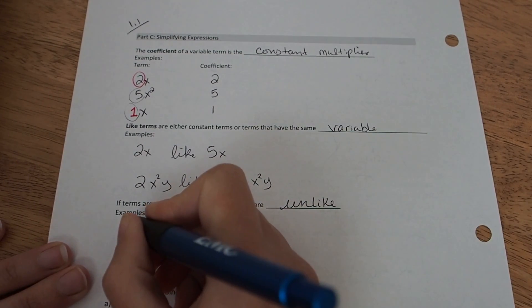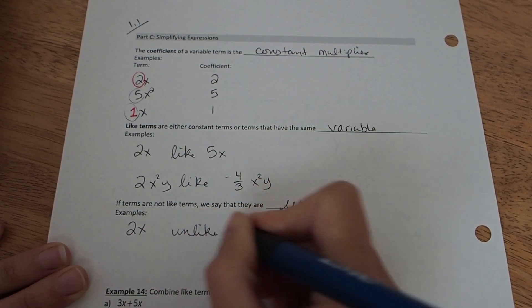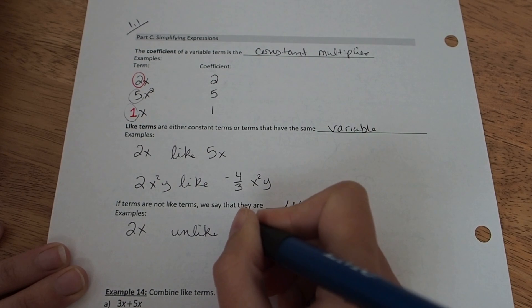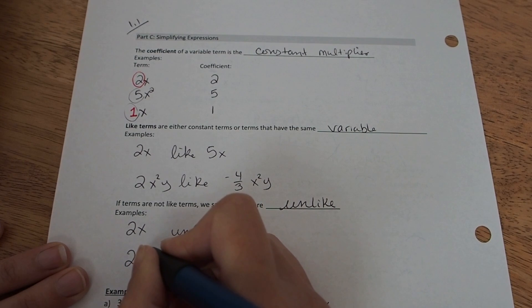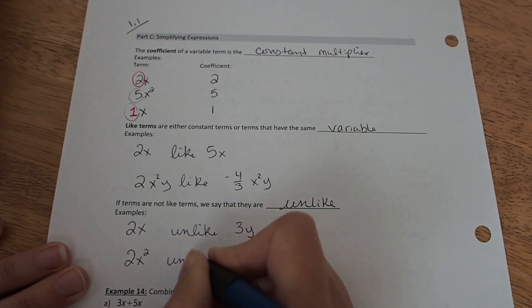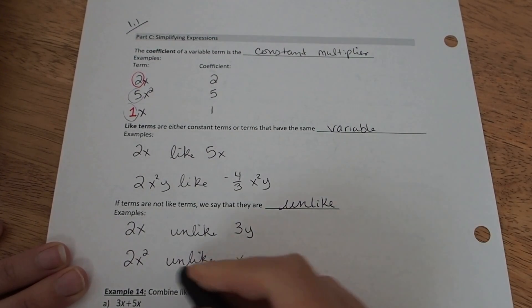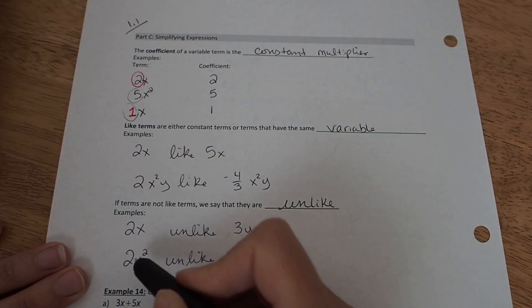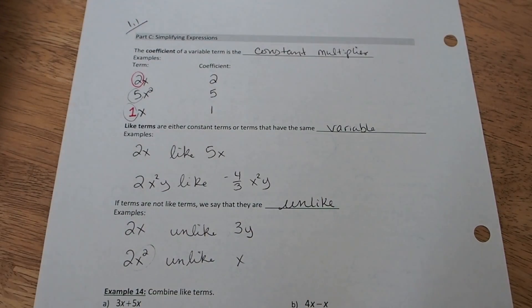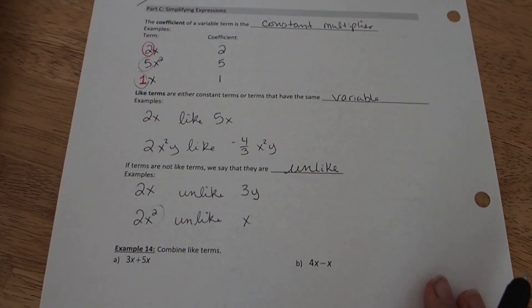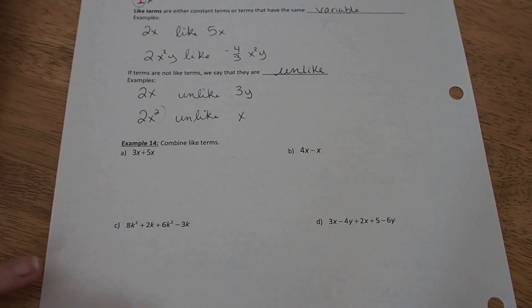Examples of unlike terms might be 2x is unlike 3y, so it's a different variable. Or 2x² would be unlike x because x² is not the same exact variable component as x. If a variable has an exponent as part of the variable term, then you would need to be identical in order to be like. The important thing about like terms is that you can only combine two terms if they are like. They have the same variable component.